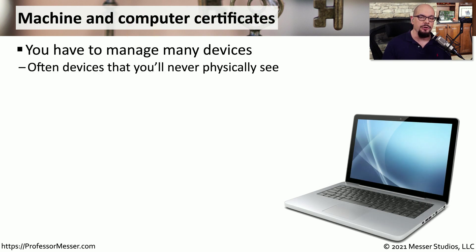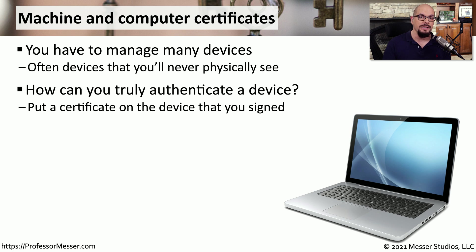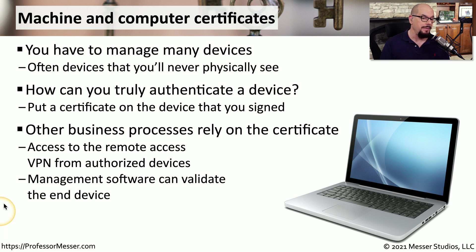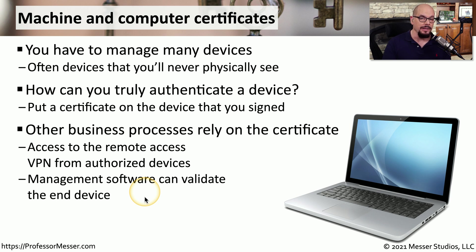As a system administrator deploying hundreds or thousands of devices, it's important to be able to tell if a connecting device is trusted. One way to do this is to deploy machine or computer certificates to all devices that need to be trusted by your organization. If a device contains one of these certificates, you know it must be trusted. A good example is VPN access — before a device gains access to the internal network, it provides an additional authentication check for that certificate, and if it validates properly, we know that machine is trusted by the organization.